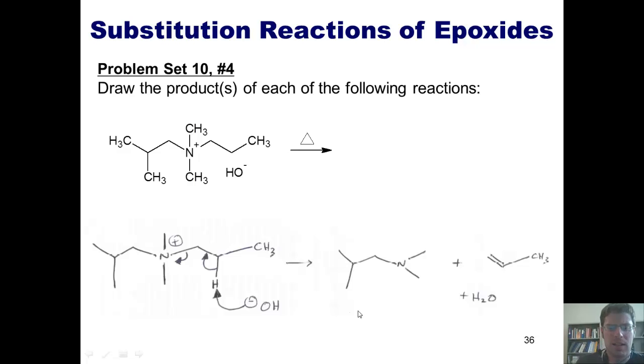Now, you might look at this and ask, couldn't the hydroxide grab a proton off of this carbon, pump the electrons down here, and then push these two electrons into the nitrogen, giving me a double bond between these two carbons here? That would be a more substituted alkene, and would seemingly, therefore, be a more stable alkene by Zaitsef's rule.